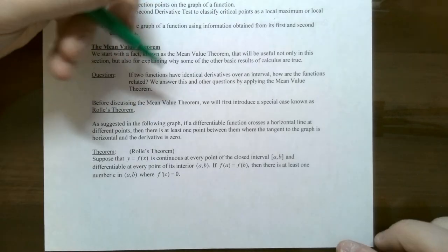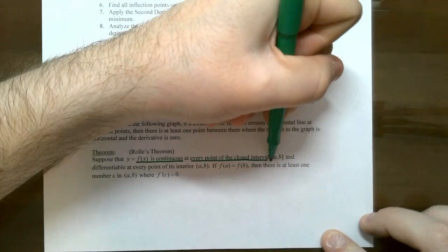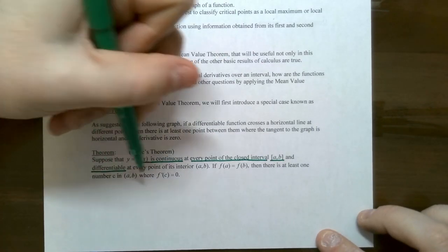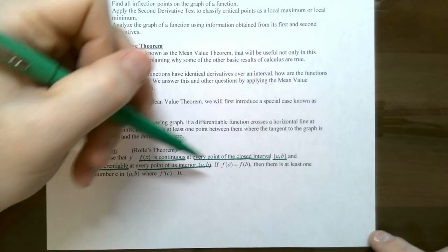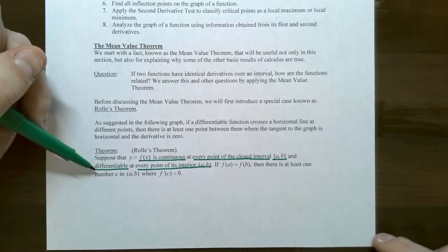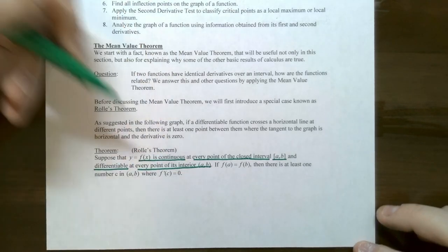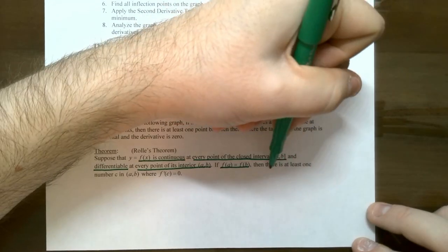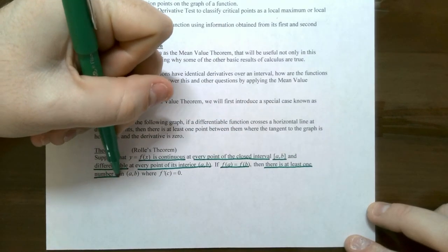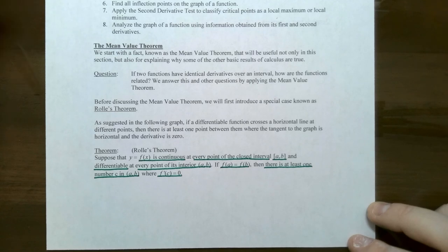Rolle's theorem states: you have a function that is continuous at every point on a closed interval a to b, and the function is also differentiable at every point of the interior, the open interval a to b. Differentiable means there are no cusps, no corners, no vertical tangent lines, no places where the derivative does not exist on the interior a to b. Those are the hypotheses. If f(a) equals f(b), Rolle's theorem says there is at least one number x equals c in this interval where the derivative is zero — a horizontal tangent line at x equals c.